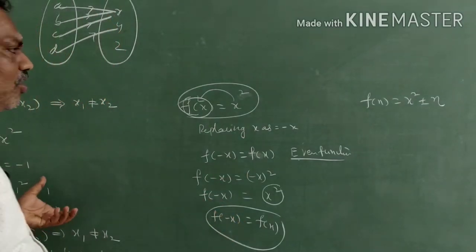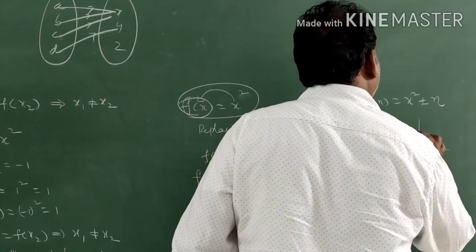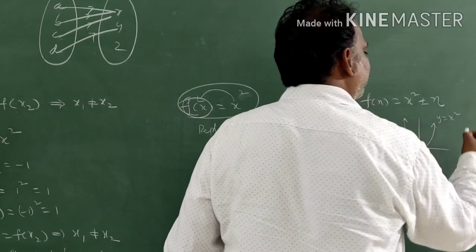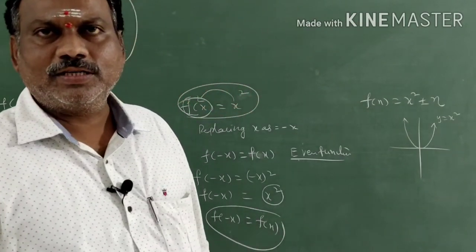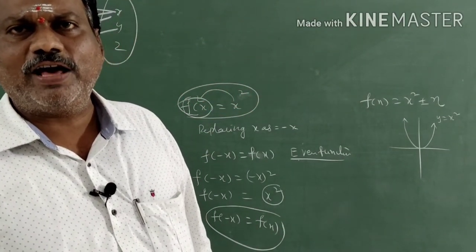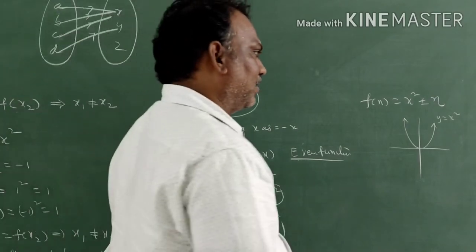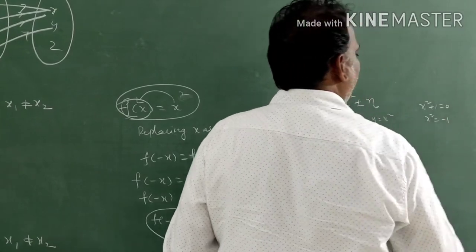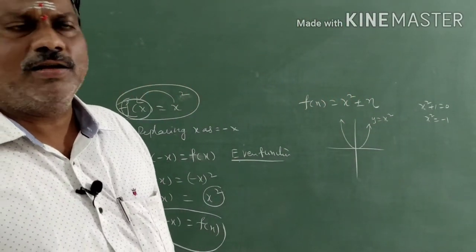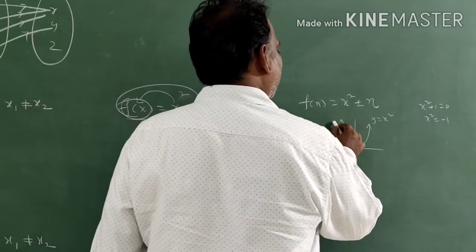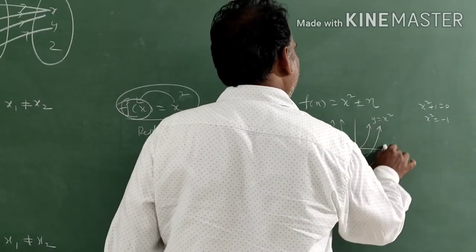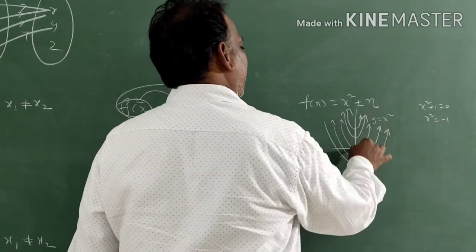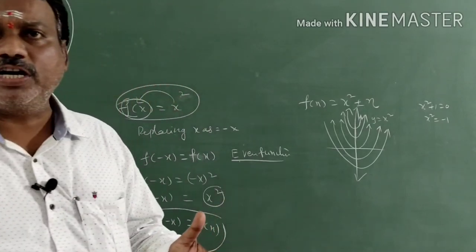This diagram you know very well — it is a parabola. This is y = x². Suppose you take y = x² + 1, the graph shifts up. These are all family of parabolas and they are all even functions.